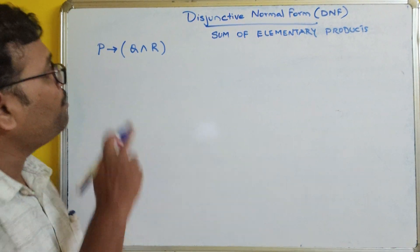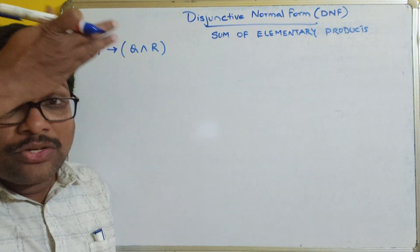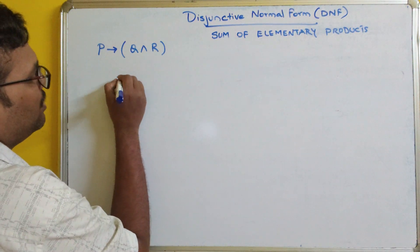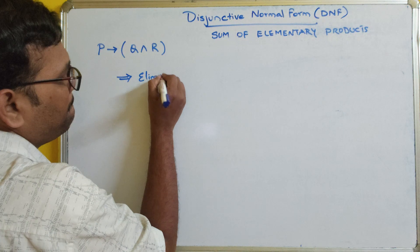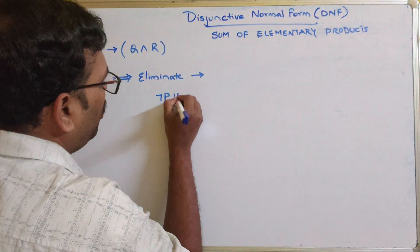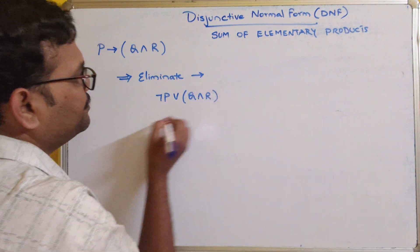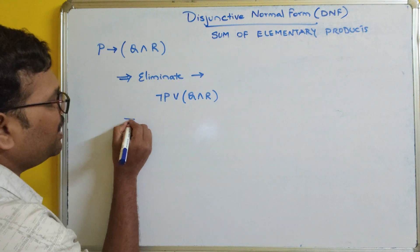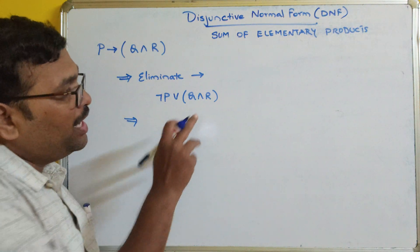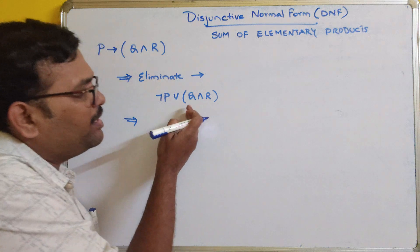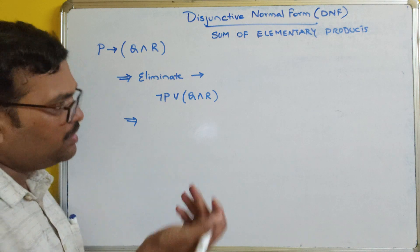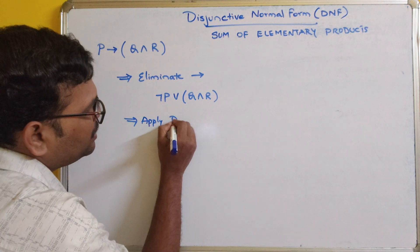Let us solve one more example: P implies (Q and R). This is not in DNF, so we have to convert it. Start with the first step — eliminate implies. This can be eliminated to: negation P or (Q and R). There is no further negation to deal with here, since negation P is a single literal and Q and R is a complete elementary product with no outer negation. So we can directly apply the distributive law.